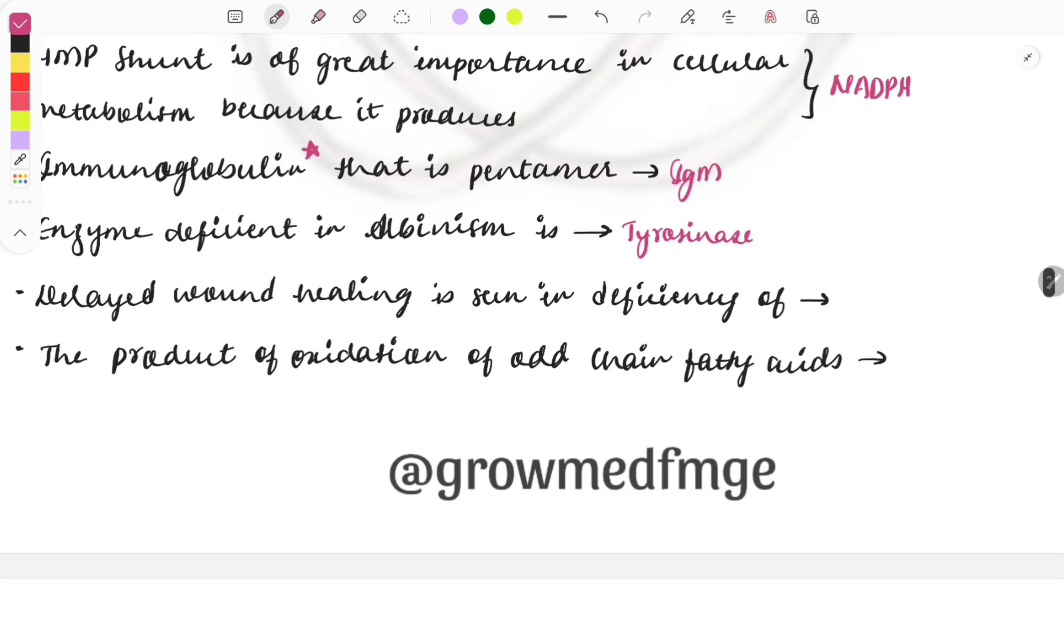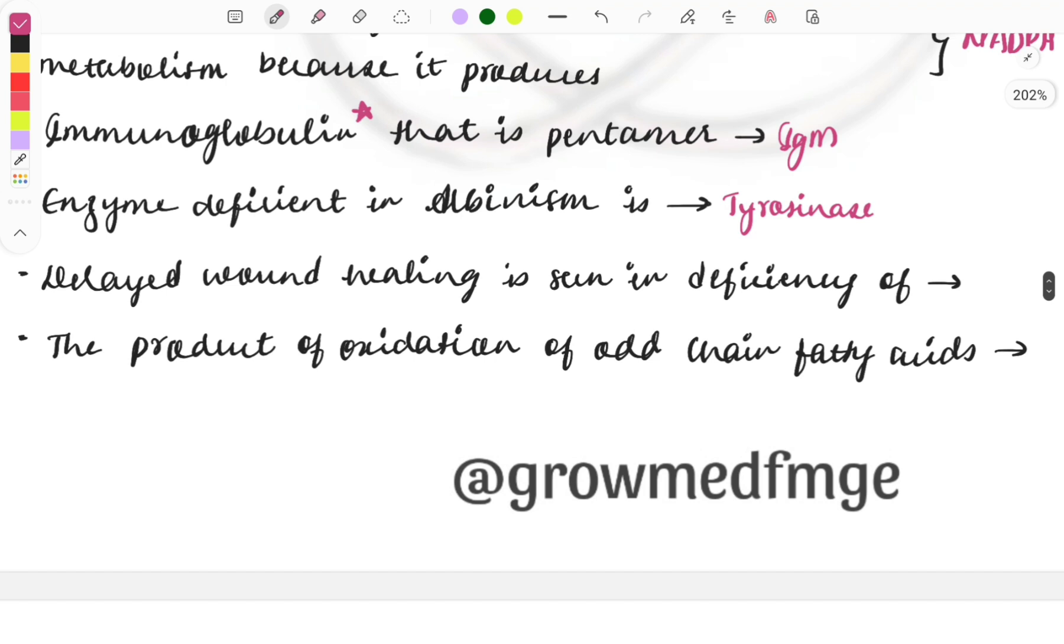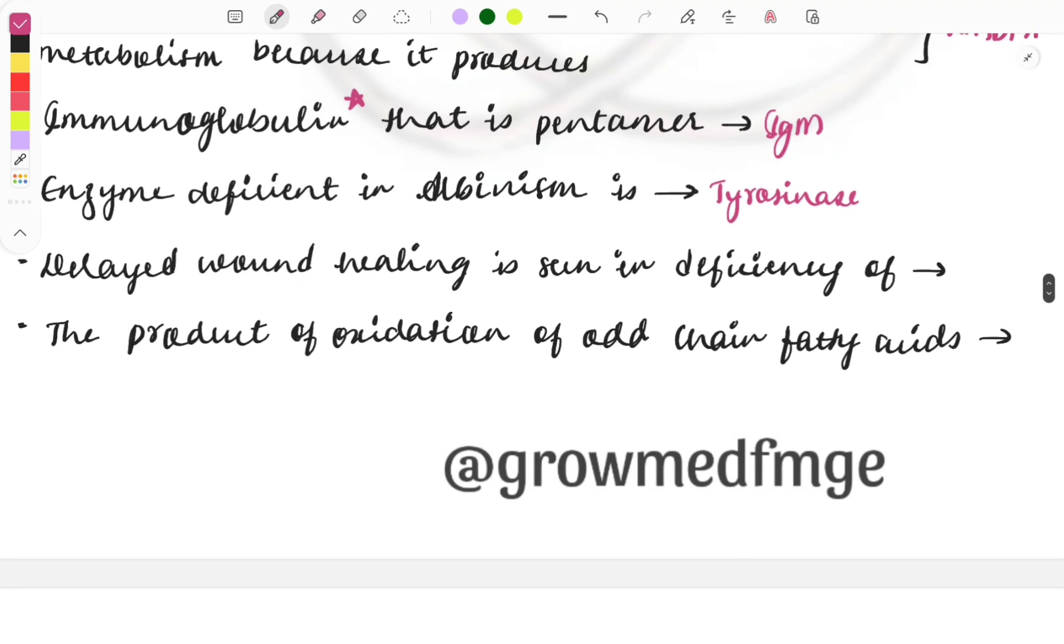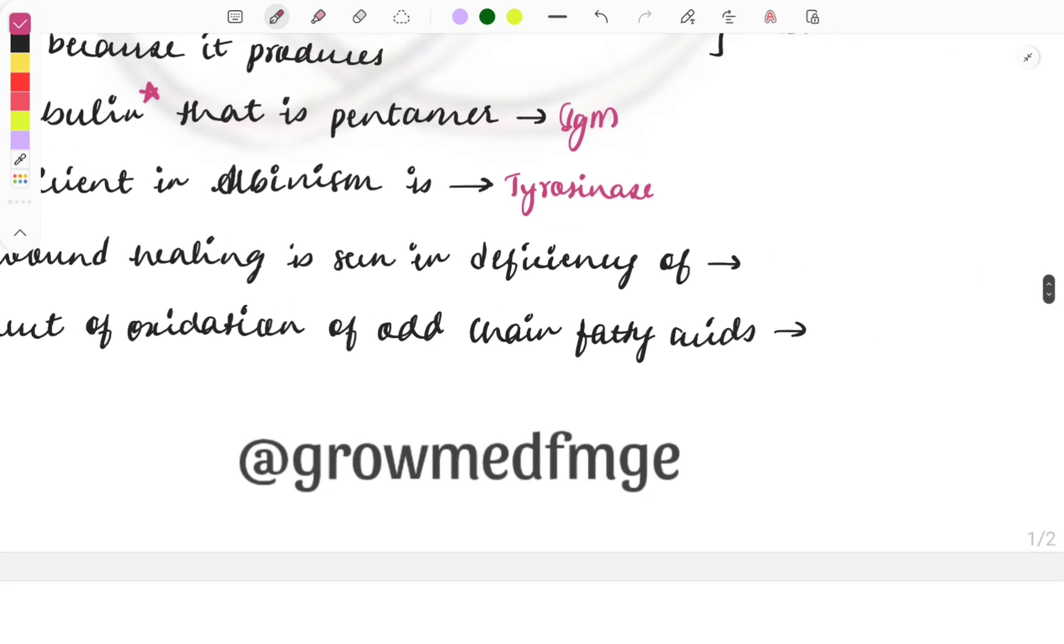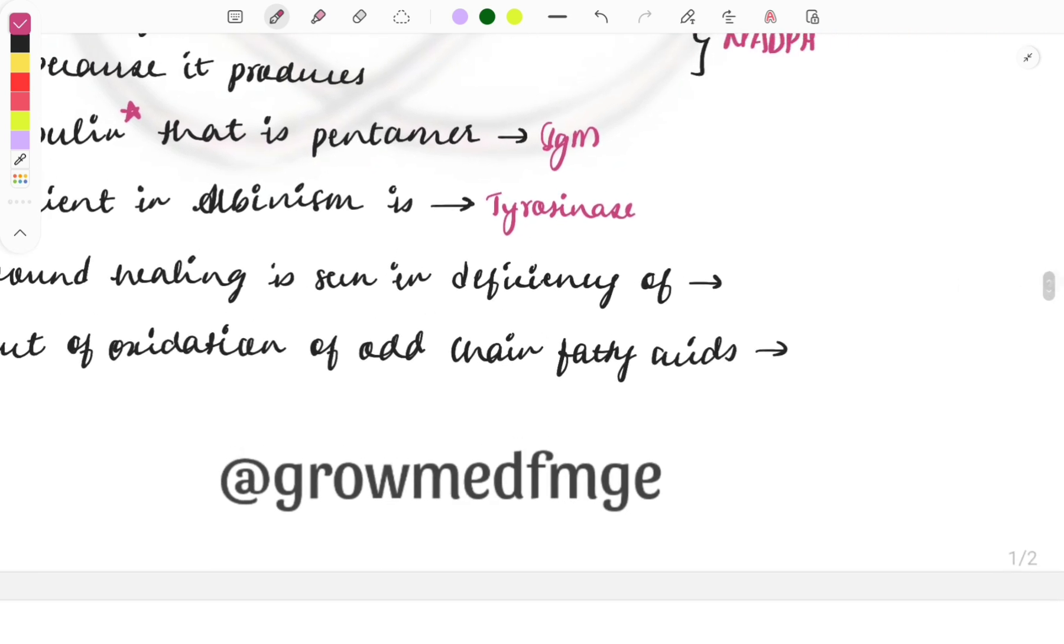Enzyme that is deficient in albinism is tyrosinase. Tyrosinase enzyme deficiency will be causing albinism, that is the white patching. Albinism means melanocytes will not be forming, due to which there will be white patches seen - white hair, fair skin, and sometimes the eyeball will also be affected, giving a different color.